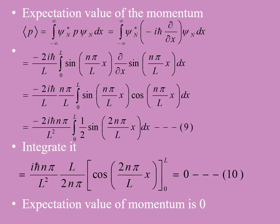Substituting the value of psi_n, it becomes (-2iℏ/L) times the integral from 0 to L of sin(nπx/L) times (∂/∂x)[sin(nπx/L)] dx. Differentiating gives cos(nπx/L) times (nπ/L). After putting this in and integrating, the result involves evaluating cos(2nπx/L) from 0 to L, which equals 0. So the expectation value of the momentum is 0.